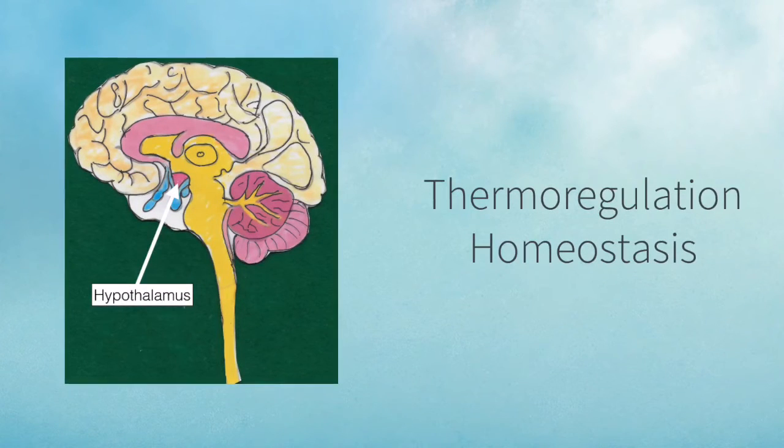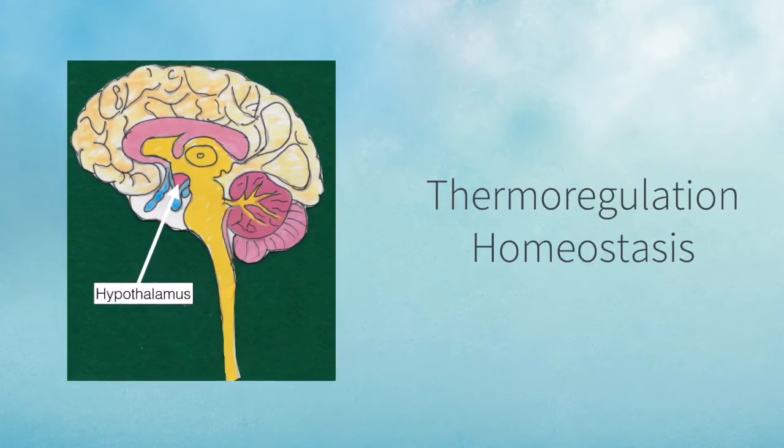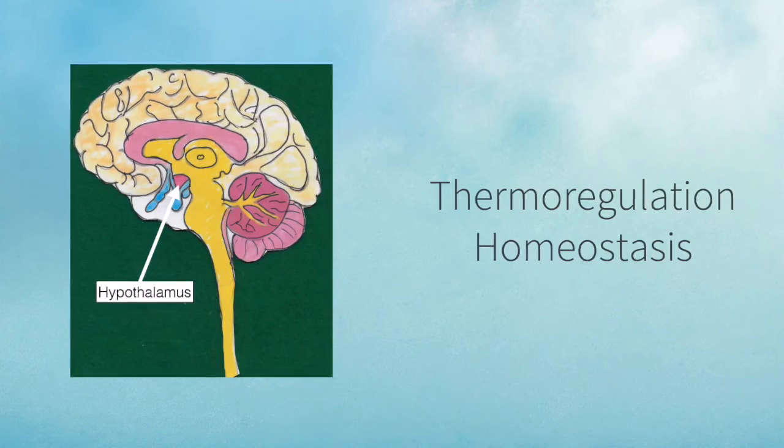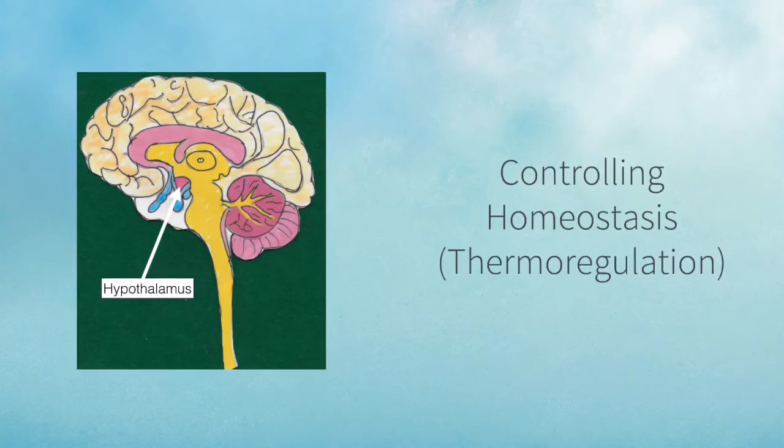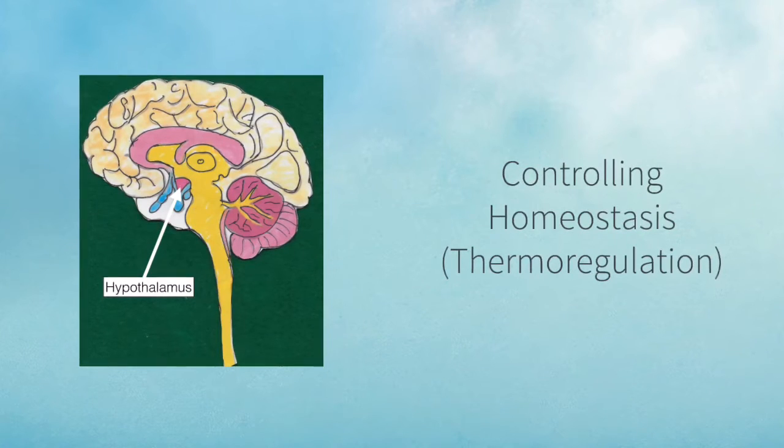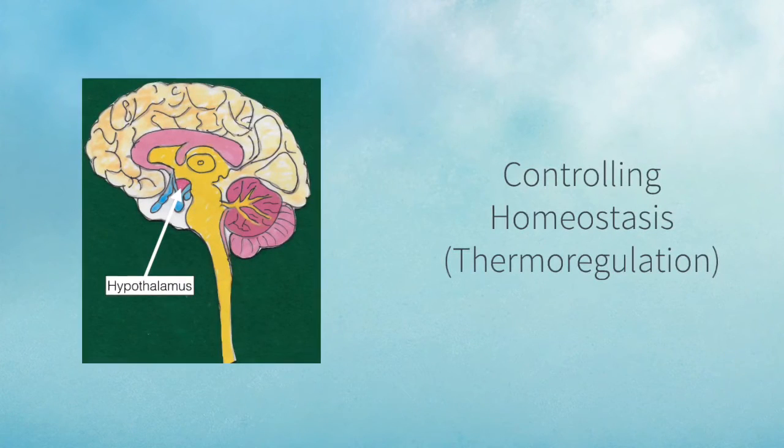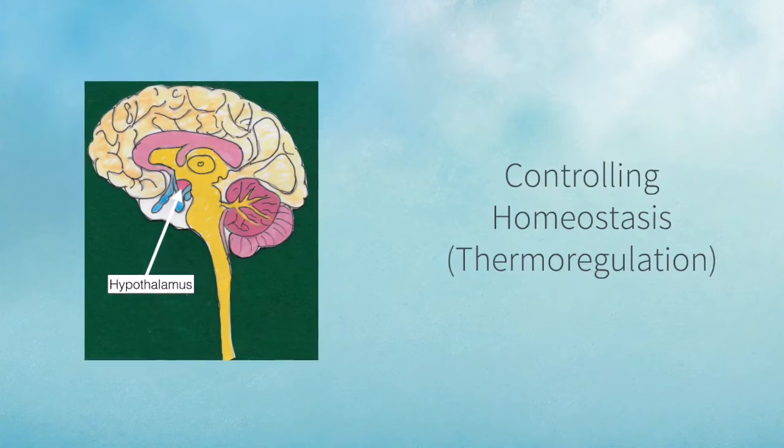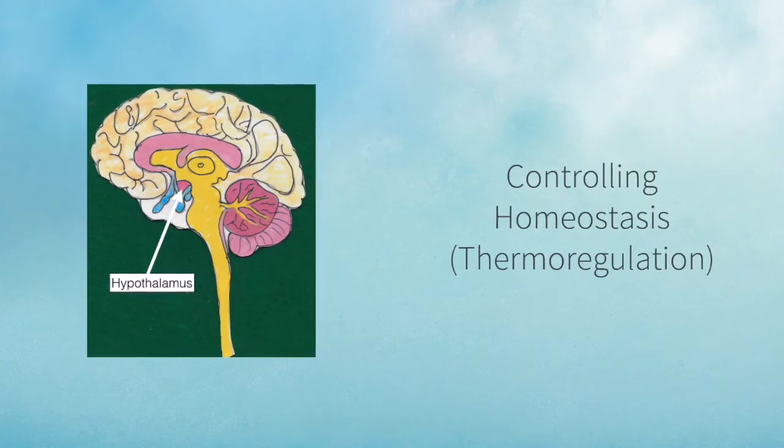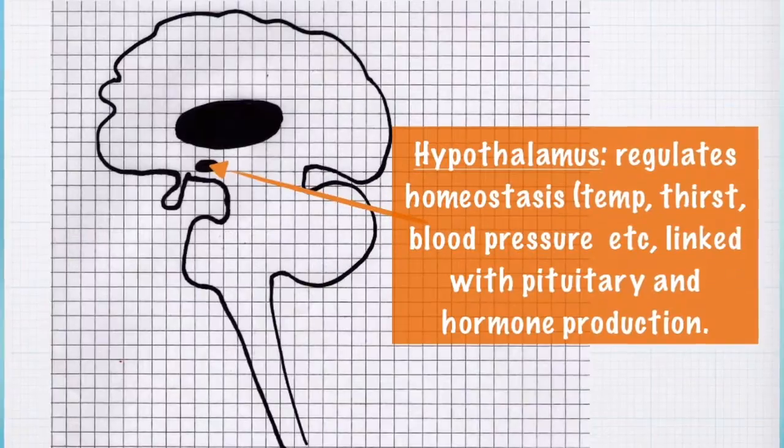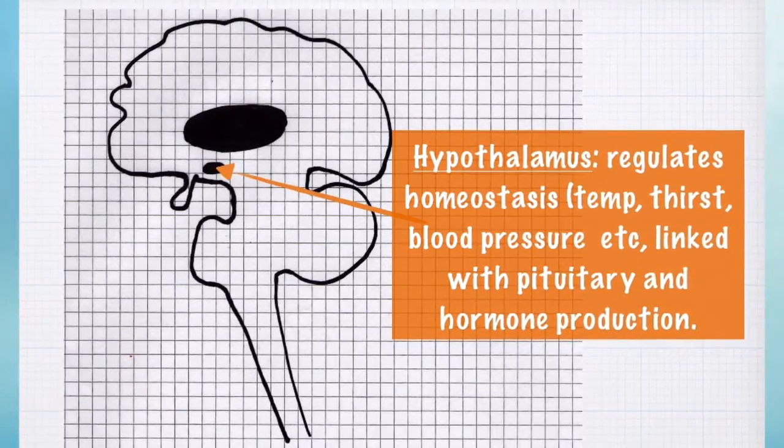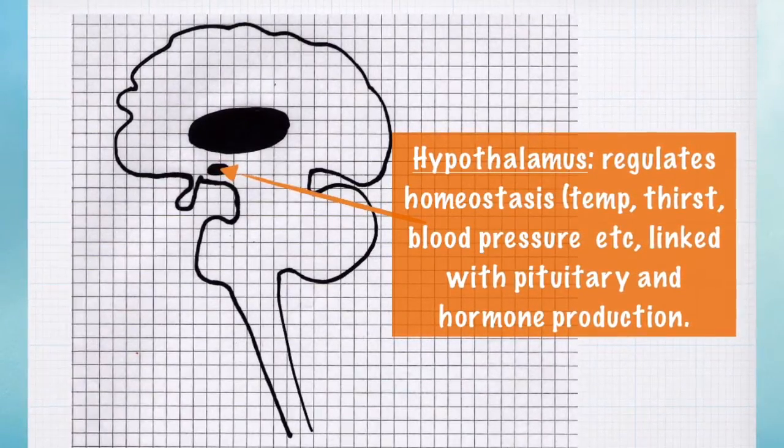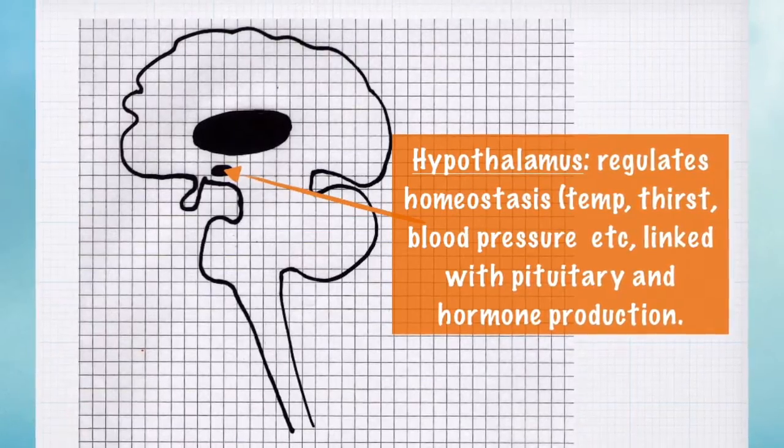Next up, it's the hypothalamus, and this out of all the sections of the brain is probably the most difficult to pinpoint on a diagram. Just always look for the pituitary gland and label above it. The hypothalamus is involved in controlling homeostasis, things like thermoregulation, your internal body temperature. To help you remember, think of hypothalamus linking with hypo. A hypo is when you have low blood sugar levels, and diabetic patients would know all about this.